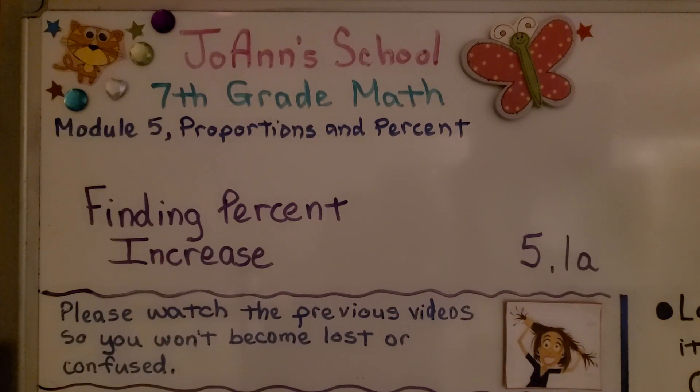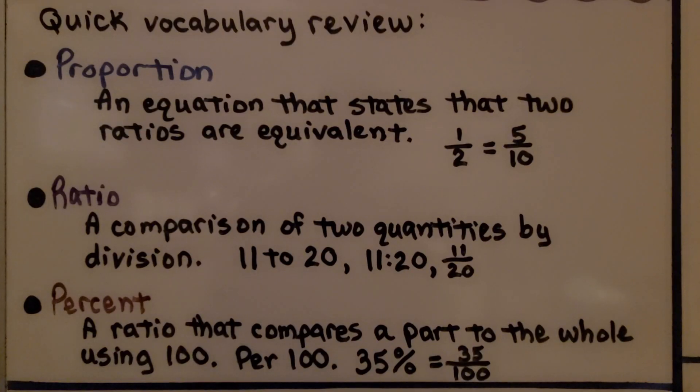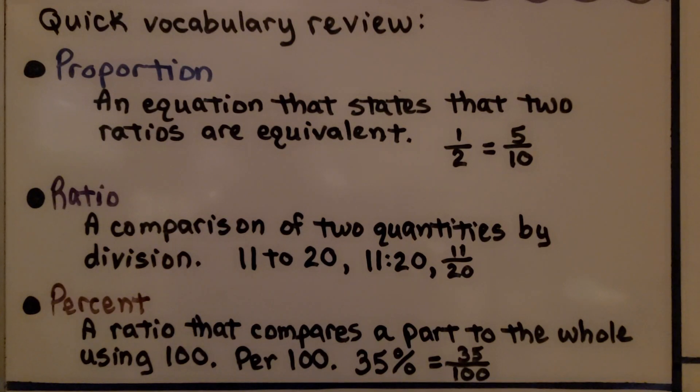We're now in Module 5. This is 5.1a Finding Percent Increase. Let's start with a real quick vocabulary review.